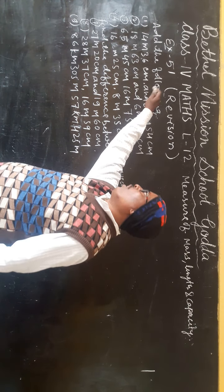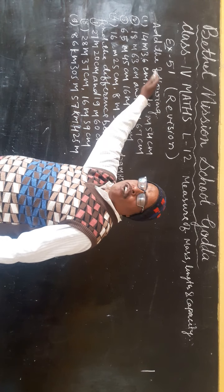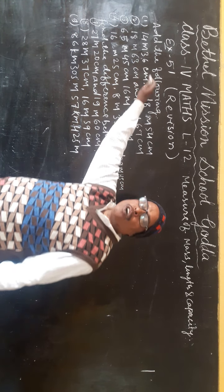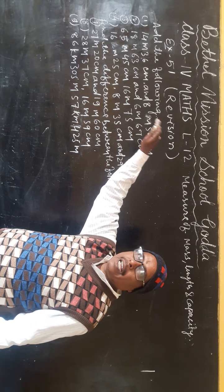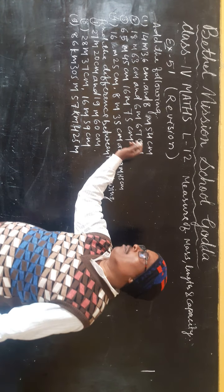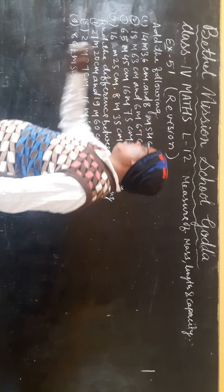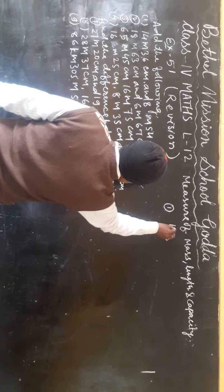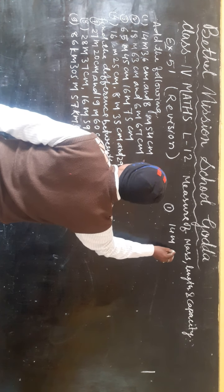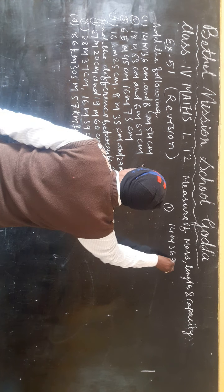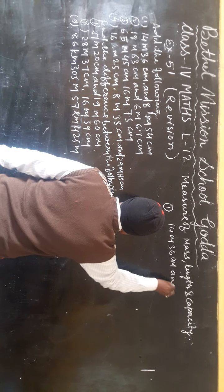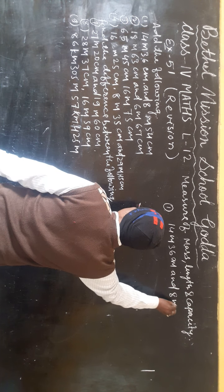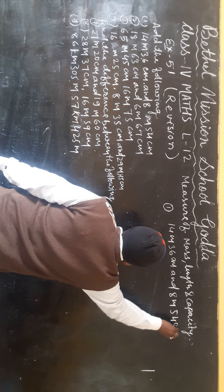Arrange the following according to column — meter under meter and cm under cm. Person number one: 14 meter, 36 cm and 8 meter, 54 cm.